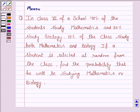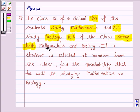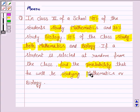Hello students, let's solve the following question of probability. It says in class 11th of a school, 40% of the students study mathematics, 30% study biology, and 10% of the class study both mathematics and biology. If a student is selected at random from the class, find the probability that he will be studying mathematics or biology.